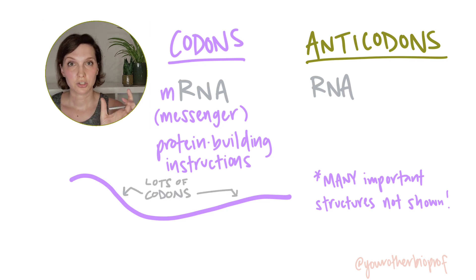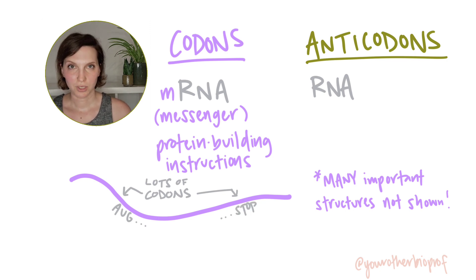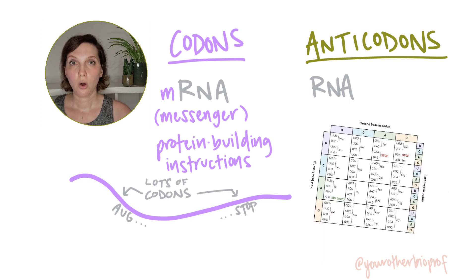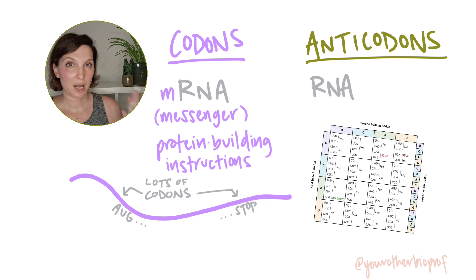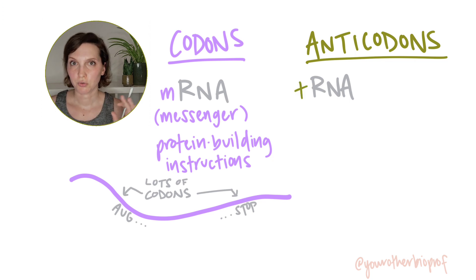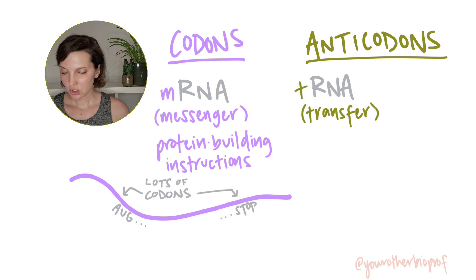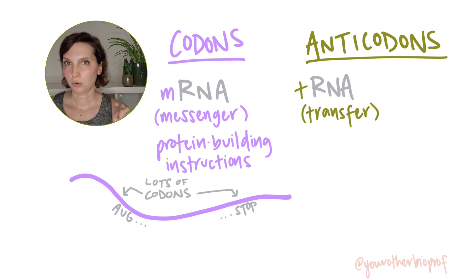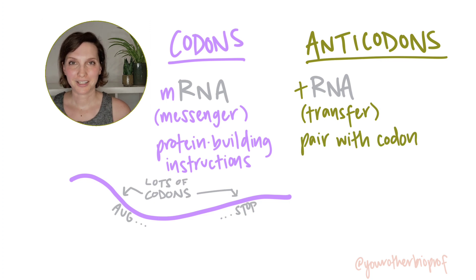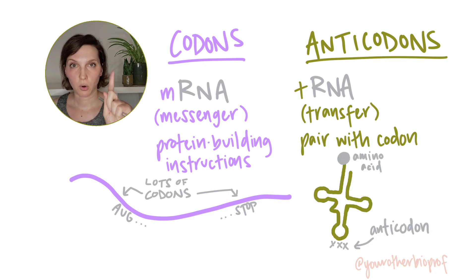Starting with the start codon AUG, all the way to the stop codon, and everything in between. Each codon codes for one of the 20 amino acids, or is one of three stop codons, which tells you when to stop translating. tRNA, or transfer RNA — its job is to find a complementary codon to pair up with, and to deliver, or transfer, the correct amino acid to the correct spot in our growing polypeptide chain. On a tRNA, you only have one anticodon.